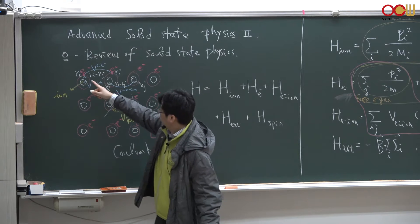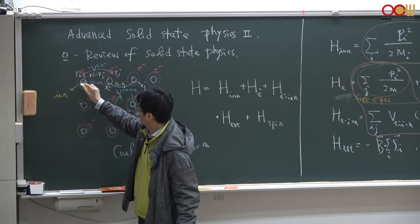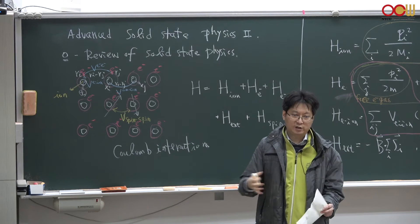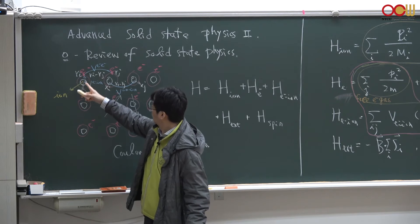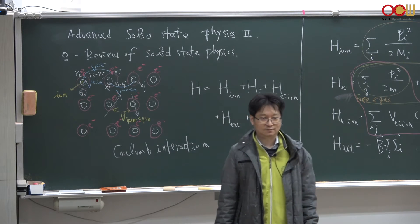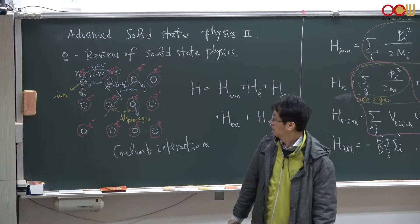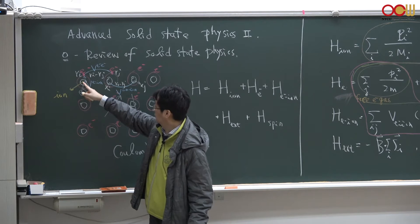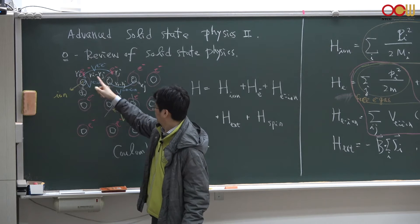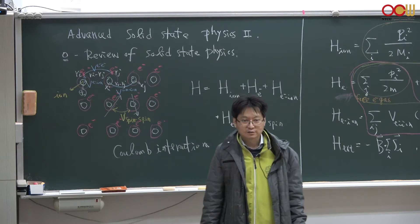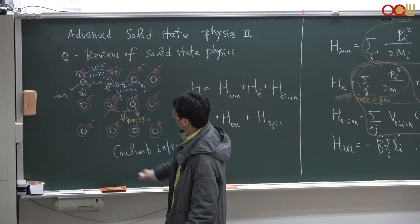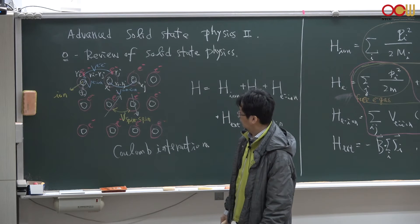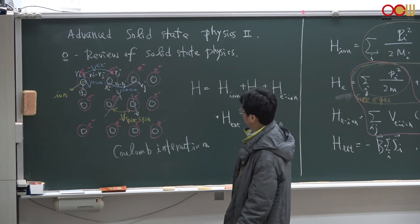The second Coulomb interaction is between electrons and ions. The ion cores carry positive charge and electrons carry negative charge, so they are attractive to each other. This Coulomb attraction between an electron and an ion occurs most likely on the same lattice site, because the electron is very close to that ion core, but too far away to interact strongly with neighboring ions. They can also interact with further neighbor ion cores, but the interaction strength decays very quickly.